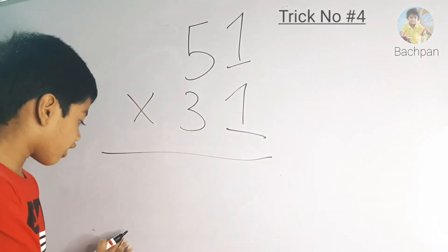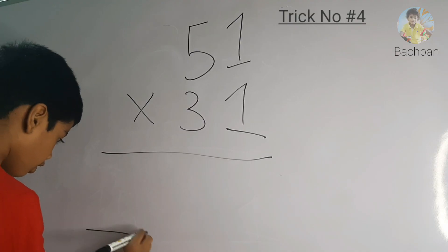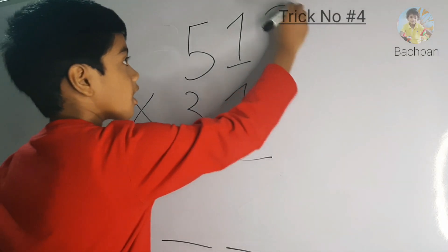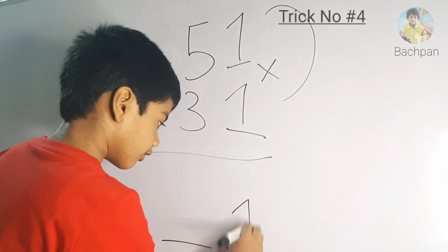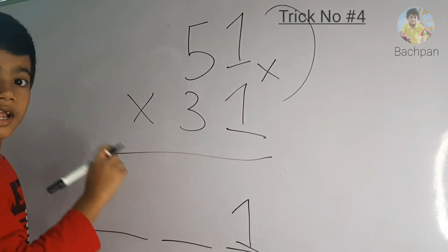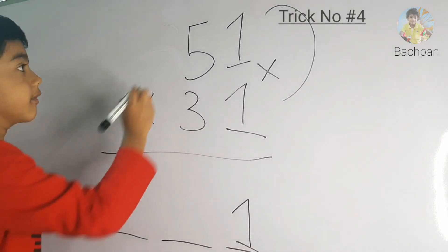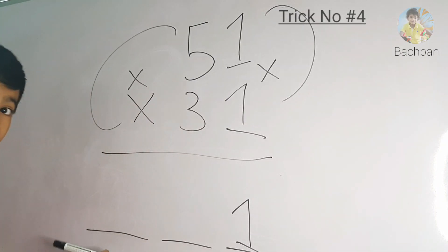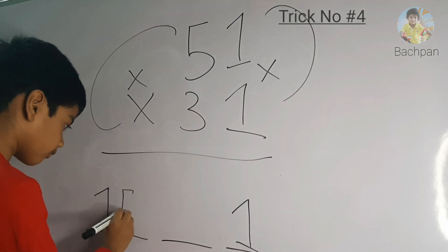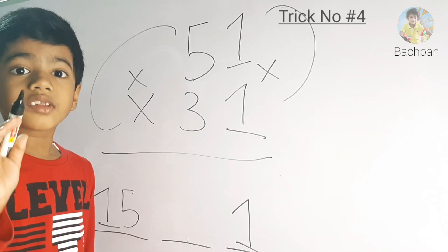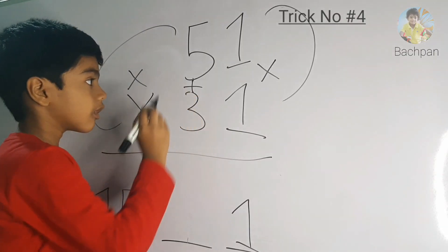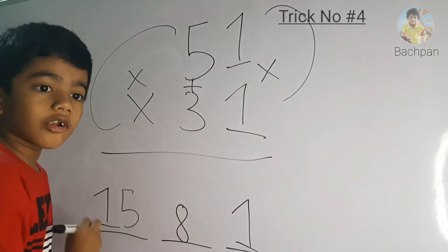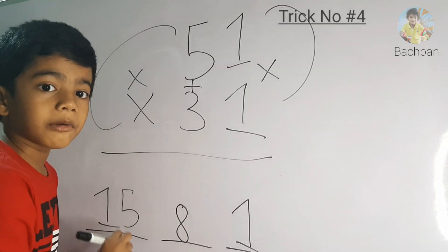Draw 3 lines as below. One, two, three. 1 times 1 is 1. So write here 1. Now 5. Let's do 5 into 3. What is 5 times 3? 15. So write here 15. Now let's add these two numbers. What is 5 plus 3? 8. So write here 8. So the answer is 1581.